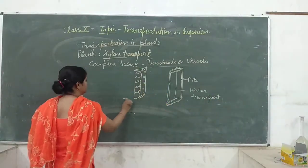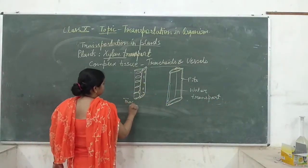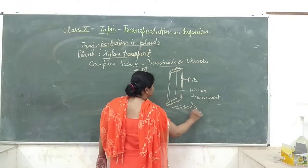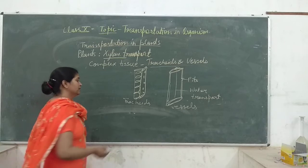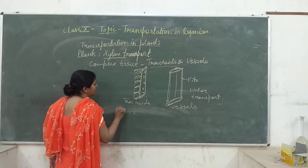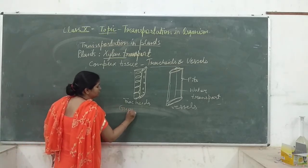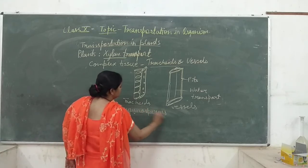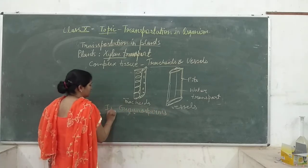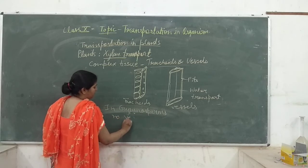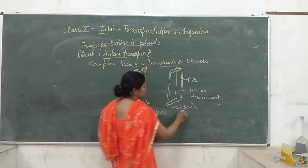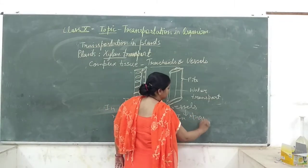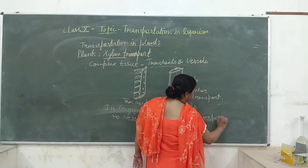So these are tracheids and these are vessels. In most of the plants, tracheids are present. In gymnosperms, tracheids are only present. But in higher plants — in angiosperms — vessels are also present.